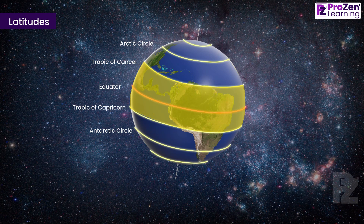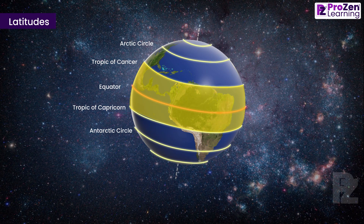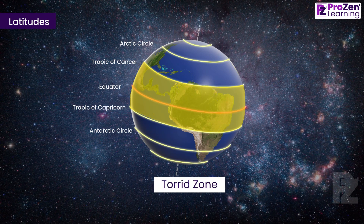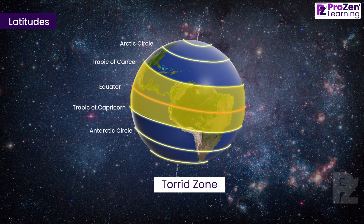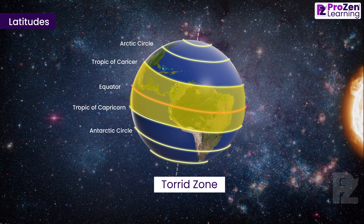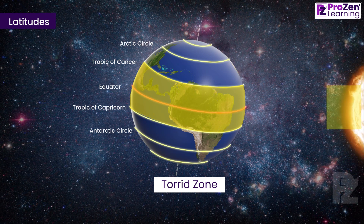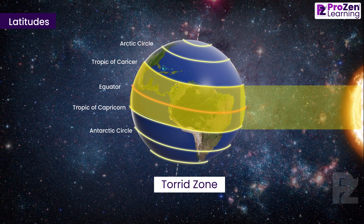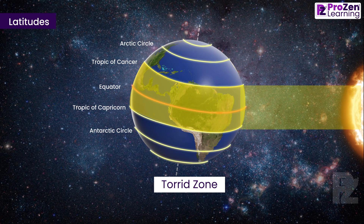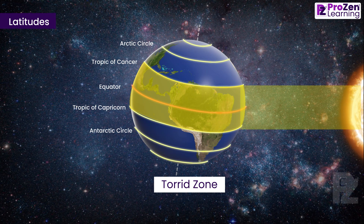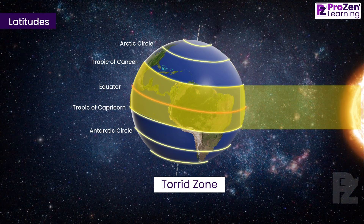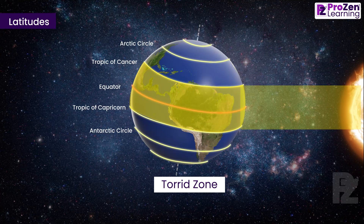Latitudes play a crucial role in determining the heat zones of the Earth. The area between the Tropic of Cancer and the Tropic of Capricorn is known as the Torrid Zone. Here, the midday sun is directly overhead at least once a year, receiving the maximum heat.